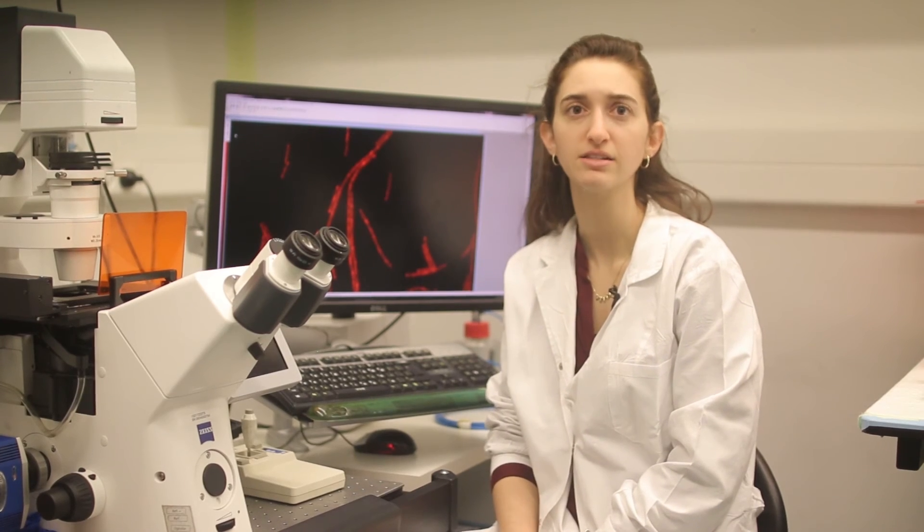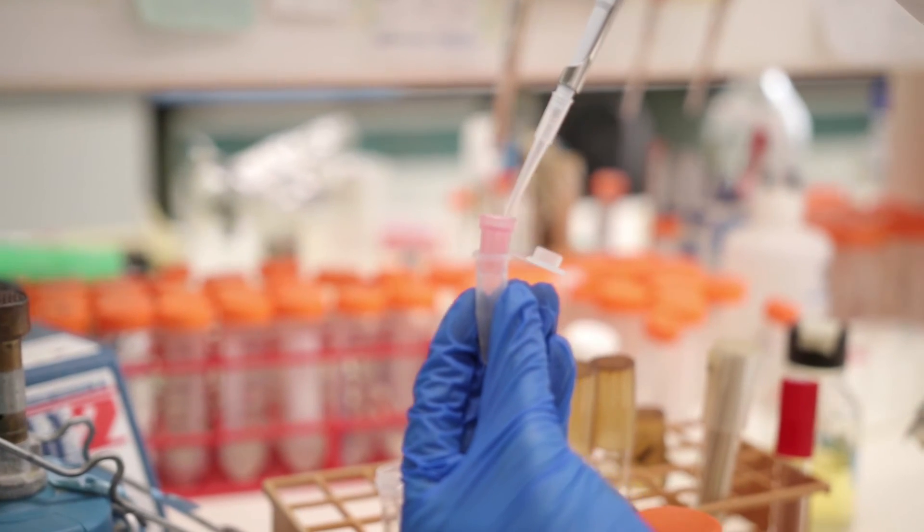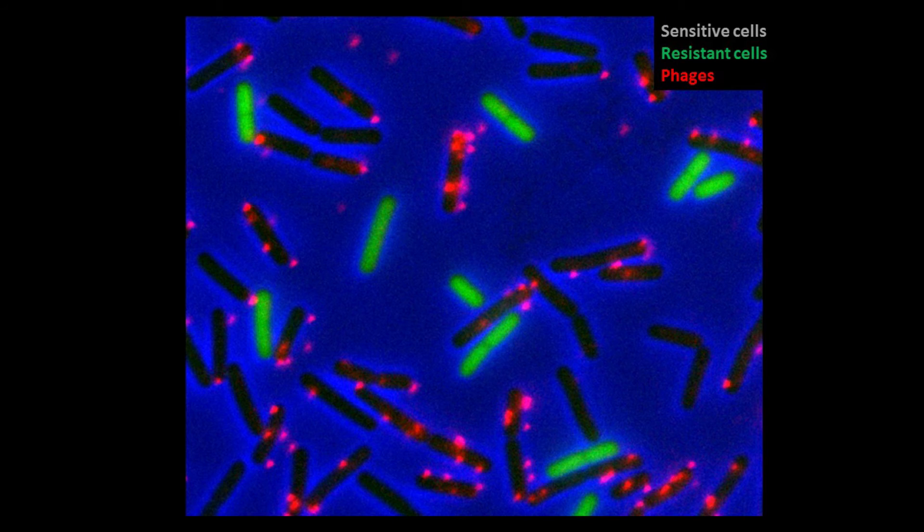Our next question was, can ESSEN be mediated by exchange of phage receptors between sensitive and resistant cells? To directly investigate this possibility, we devised a way to label phages. They can be seen here as little red dots that bind the sensitive cells.